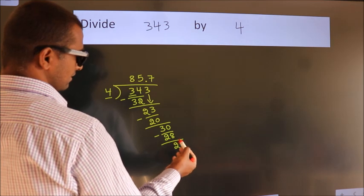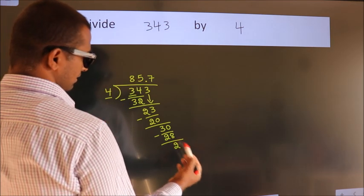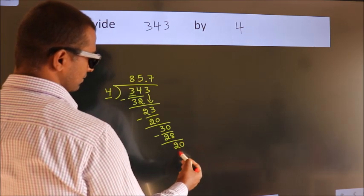After this, we already have the decimal. So, directly take 0. So, 20.